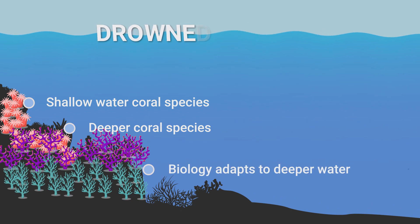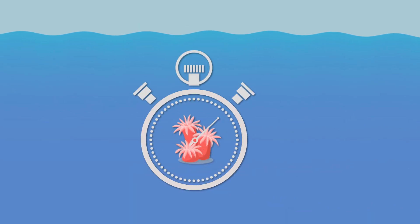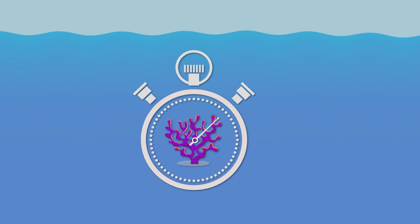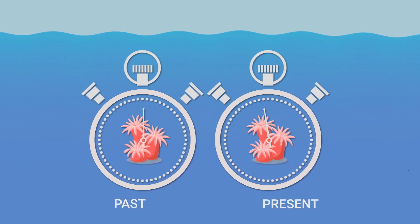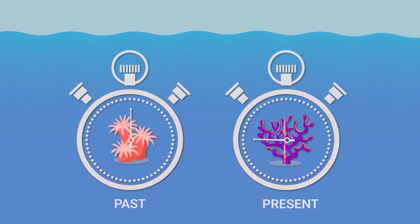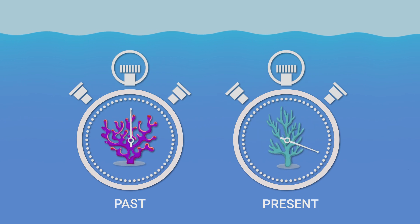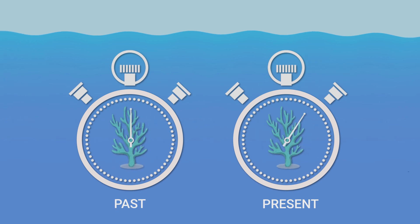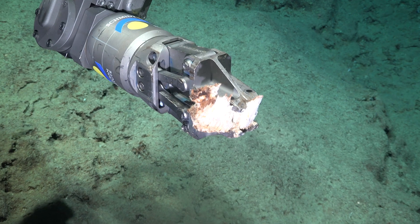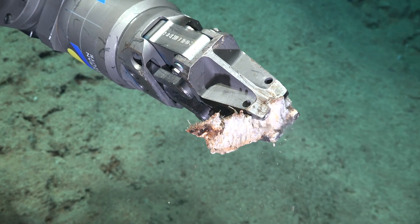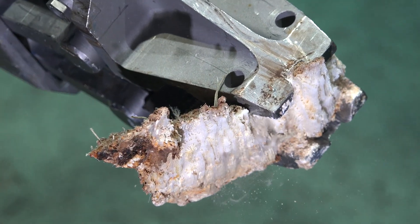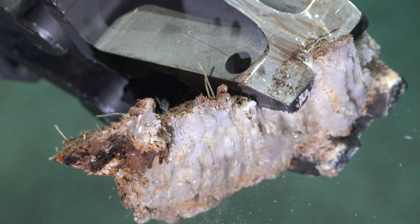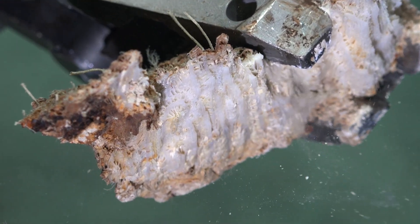We can more or less estimate the speed of the sea level change in the past, so we can compare if those sea level changes occur at the same speed that they are occurring now — and we can say whether it's a natural process or an anthropogenic induced process.